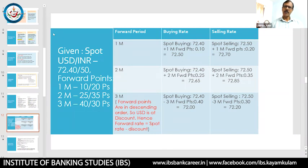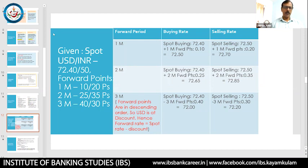To summarize the forward rate calculation: first determine whether the currency is at a premium or at a discount. If the currency is at a premium, add the forward points or forward premium. If the currency is at a discount, subtract the forward discount or forward points. To get the buying rate, take the spot buying rate and add or subtract. To get the selling rate, take the spot selling rate and add or subtract.